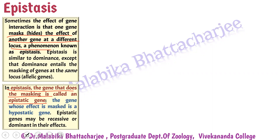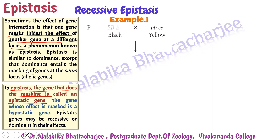We will start with the first category — recessive epistasis. The name itself suggests the recessive allele is resulting in an epistatic phenomenon, masking another gene. The best example for recessive epistasis is seen in coat color in Labrador retrievers. These dogs may have brown, black, or yellow colors, determined by two genes: the black locus and the extension locus or E-locus. We are having a pure homozygous black BB and a recessive yellow bb ee.